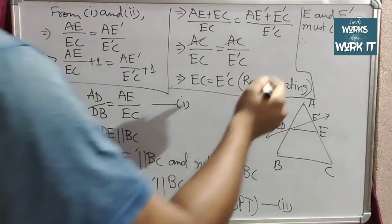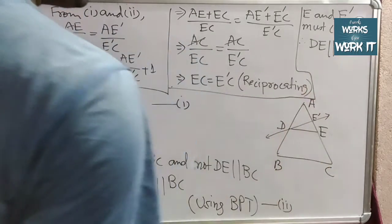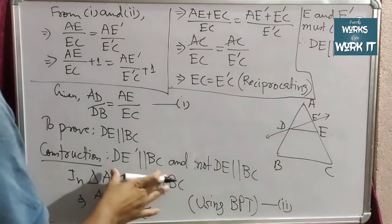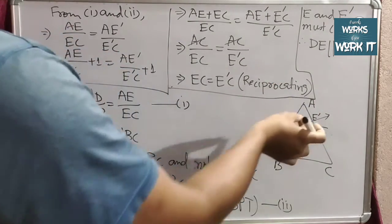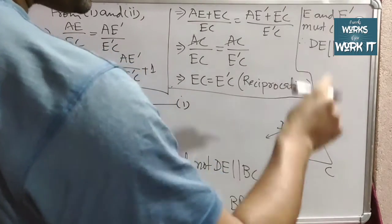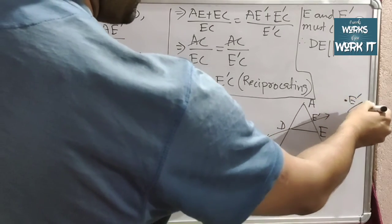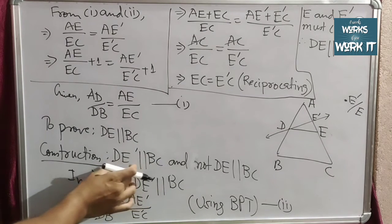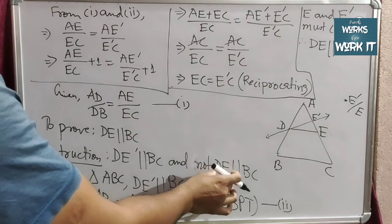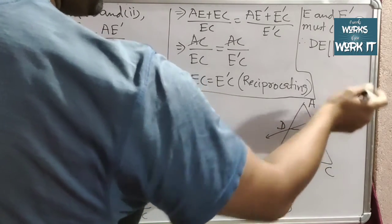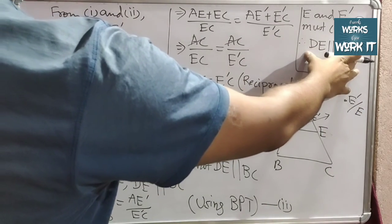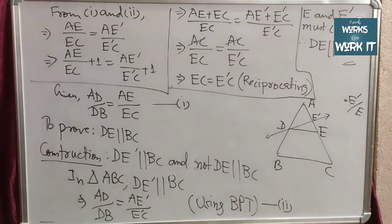Since E and E' coincide, they are the same point. So DE' becomes DE, and since we assumed DE' is parallel to BC, we can directly write that DE is parallel to BC. This completes the proof of the Converse of the Basic Proportionality Theorem. I hope you understood. In the next video, we will cover more theorems. Thank you.